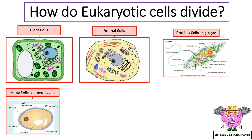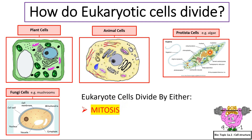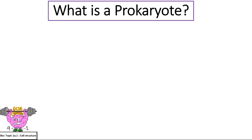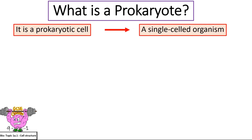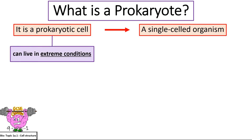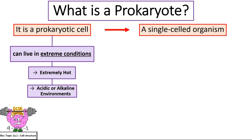How do eukaryotic cells divide? Eukaryotes divide by either mitosis or meiosis. What is a prokaryote? It is a prokaryotic cell — a single-celled organism. Where can prokaryotic cells live? Prokaryotic cells can live in extreme conditions, for example in extremely hot, acidic or alkaline environments.